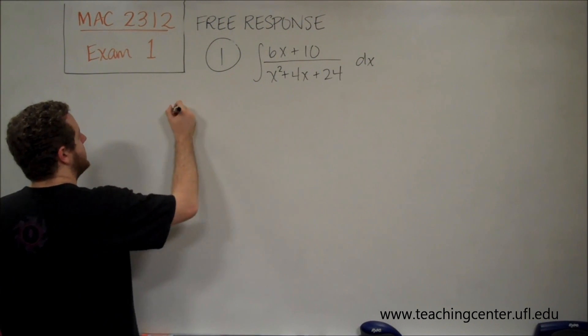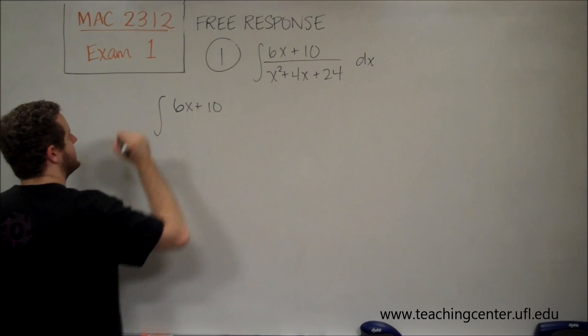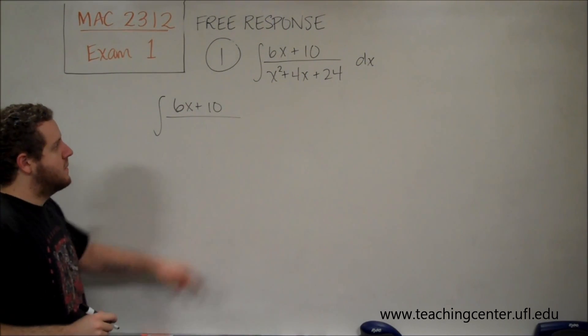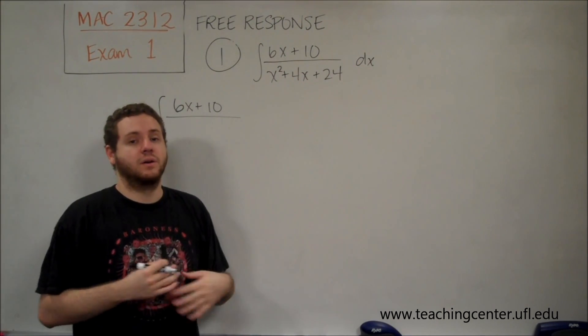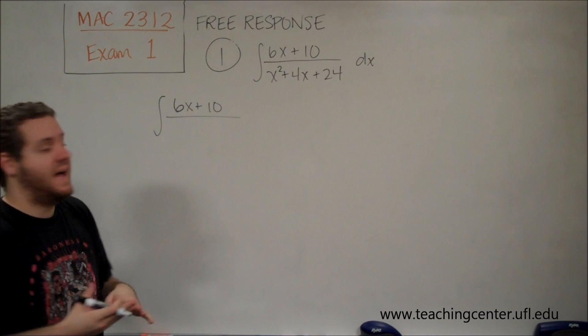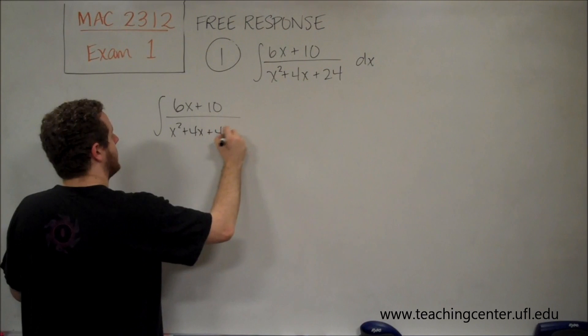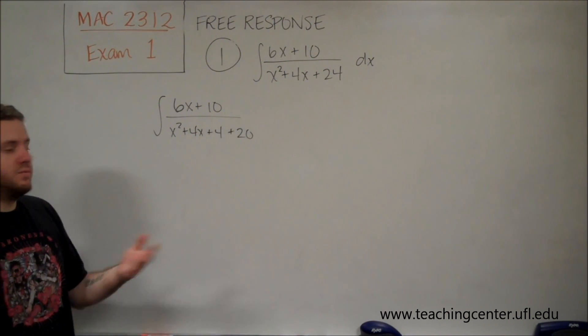So what we're going to start by doing is our numerator, 6x plus 10, is going to stay the same. Let's see how we can factor that. Now, x squared plus 4x plus 4 would be a perfect square. We have an extra 20 added there. So we can write that as such.